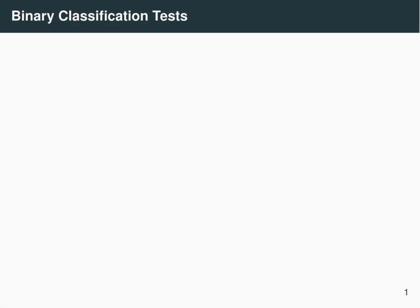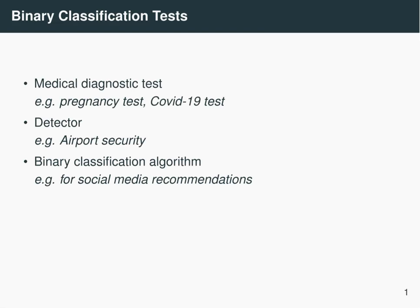These are tests that have two outcomes, and the most prominent example is a medical diagnostic test. For example, a pregnancy test will tell you whether you are pregnant or not. A COVID-19 test will tell you whether you're infected or not. Alarms and detectors are also a good example. At the airport, the full body scan will go off if you're carrying a dangerous item, and hopefully it stays quiet if you're not carrying anything dangerous.